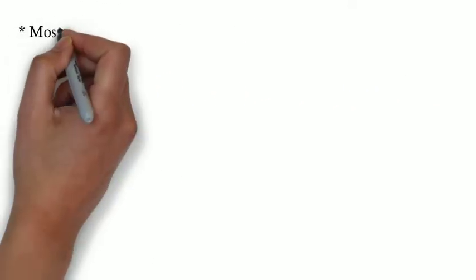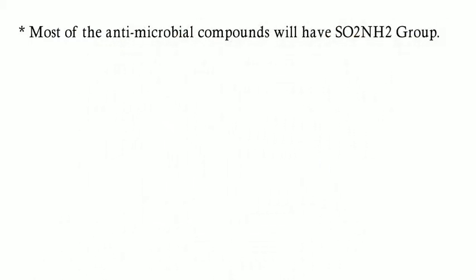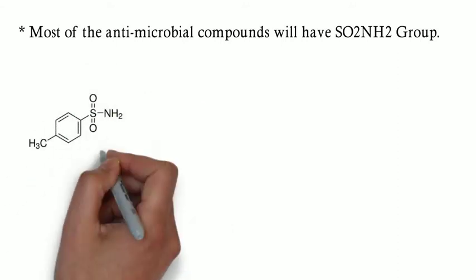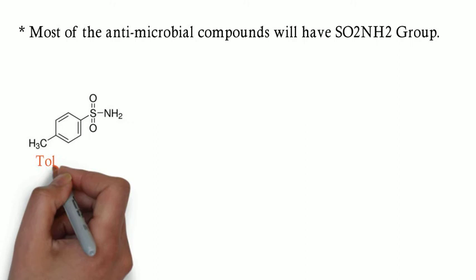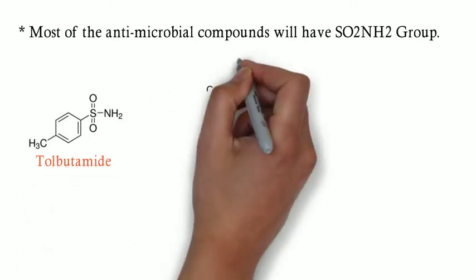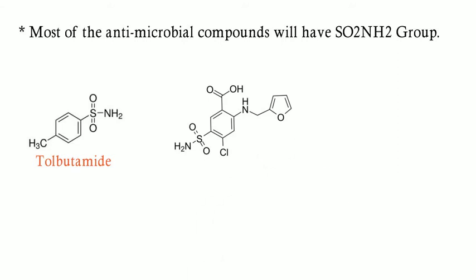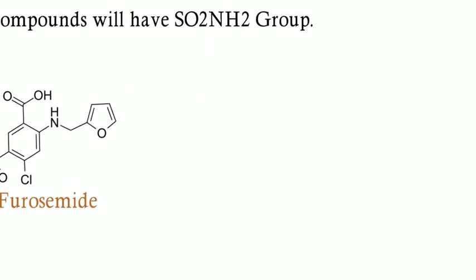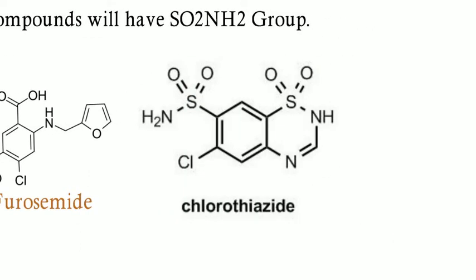Most antimicrobial compounds contain an SO2-NH2 group. Some other drugs also contain the SO2-NH2 group: the anti-diabetic drug tolbutamide has an SO2-NH2 group; among diuretics, the loop diuretic furosemide has an SO2-NH2 group, and chlorothiazide also has that group.